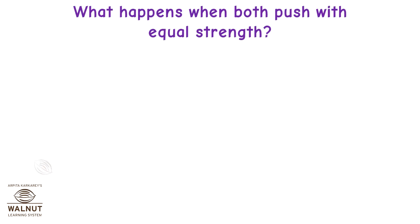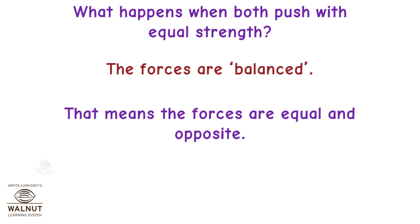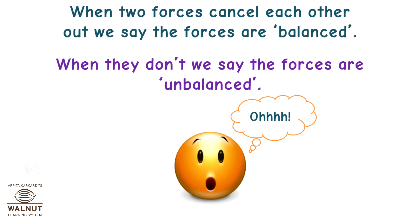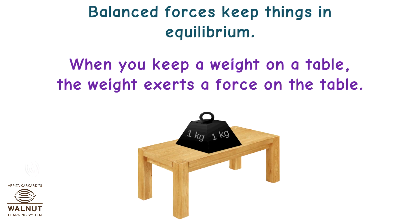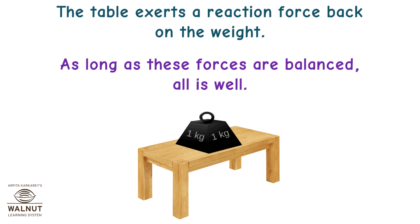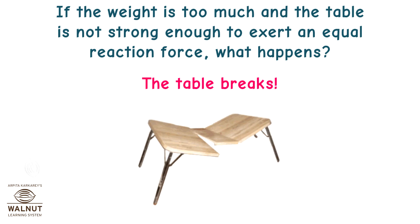What happens when both push with equal strength? When two forces cancel each other out, we say the forces are balanced. When they don't, we say the forces are unbalanced. Balanced forces keep things in equilibrium. When you keep a weight on a table, the weight exerts a force on the table, and the table exerts a reaction force back on the weight. As long as these forces are balanced, all is well. If the weight is too much and the table is not strong enough to exert an equal reaction force, the table breaks.